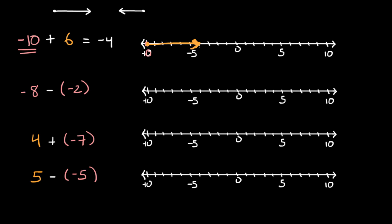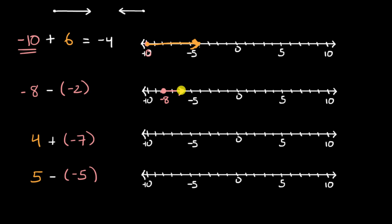Now let's do this one. We are starting at negative eight — that's negative ten, negative nine, negative eight right over there. Now we are going to subtract negative two. So let's be very careful here. If we were adding negative two, we would go two units to the left, but we're subtracting negative two, so we're going to do the opposite. Instead of going two units to the left, we're going to go two units to the right — one, two units to the right — and we end up right over there. That's negative seven, negative six. So this is equal to negative six. Remember, when you subtract, you do the opposite of what you would have otherwise done.